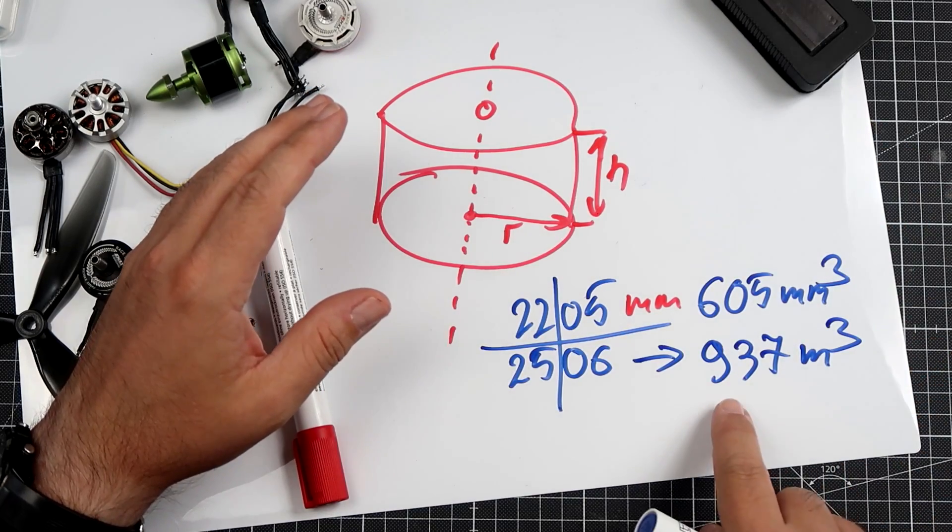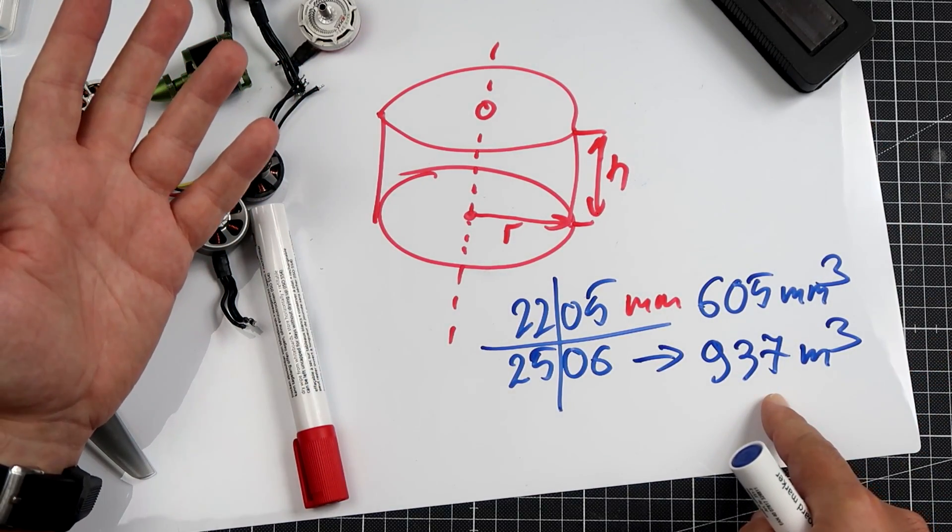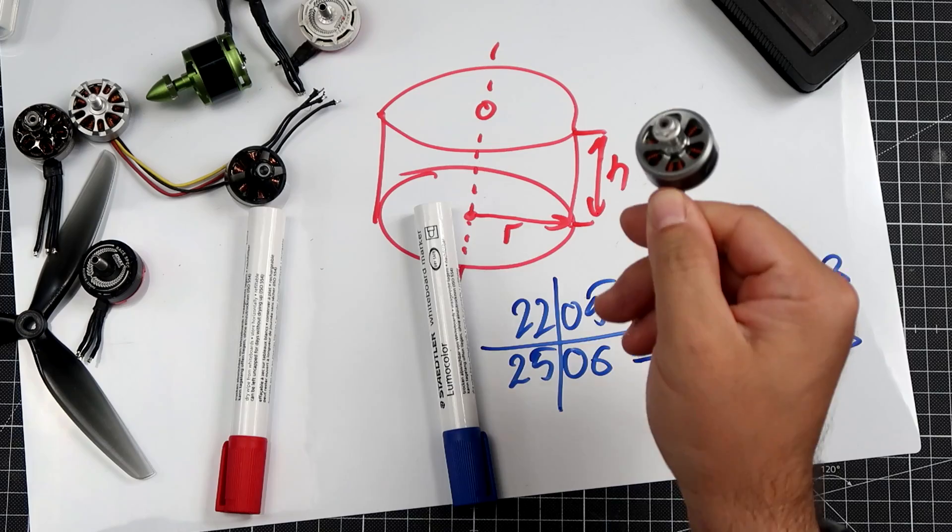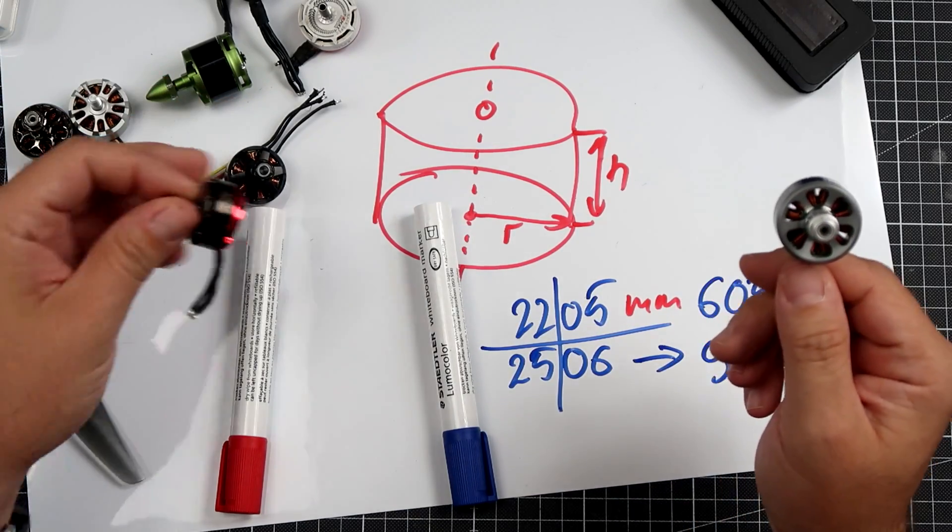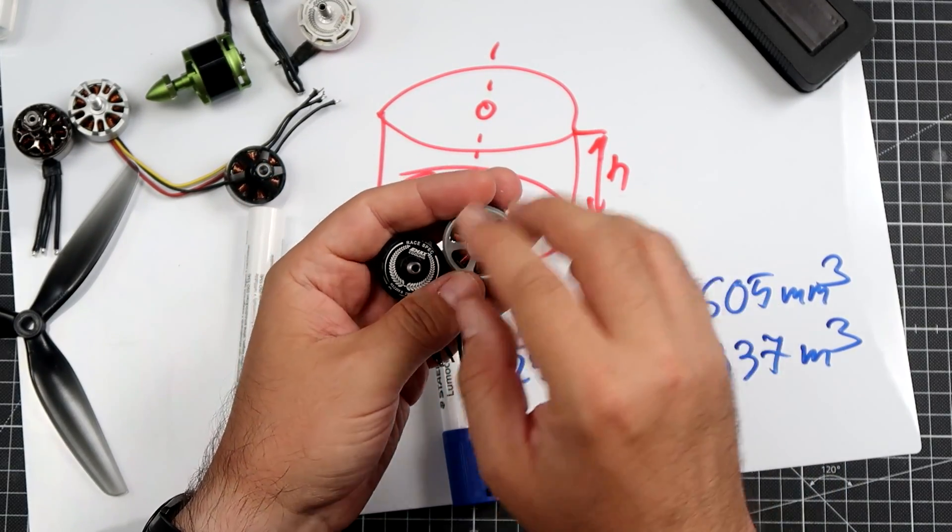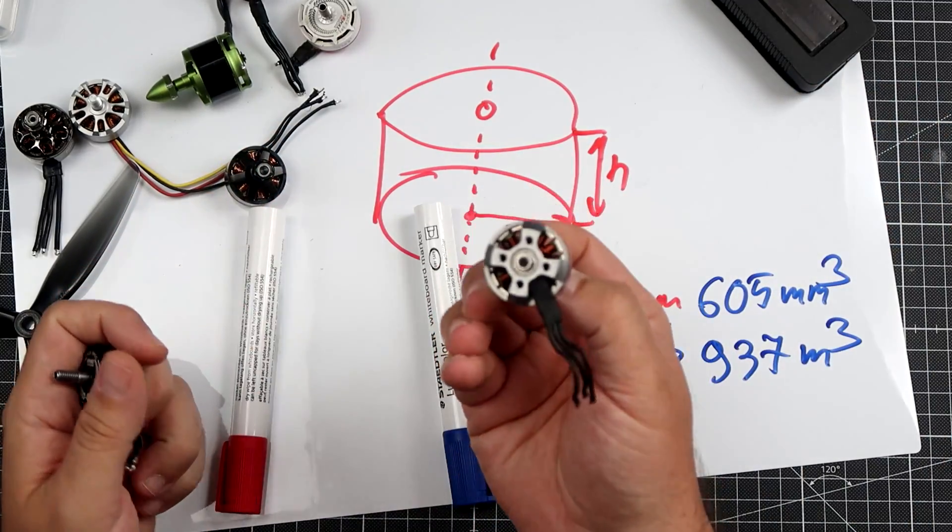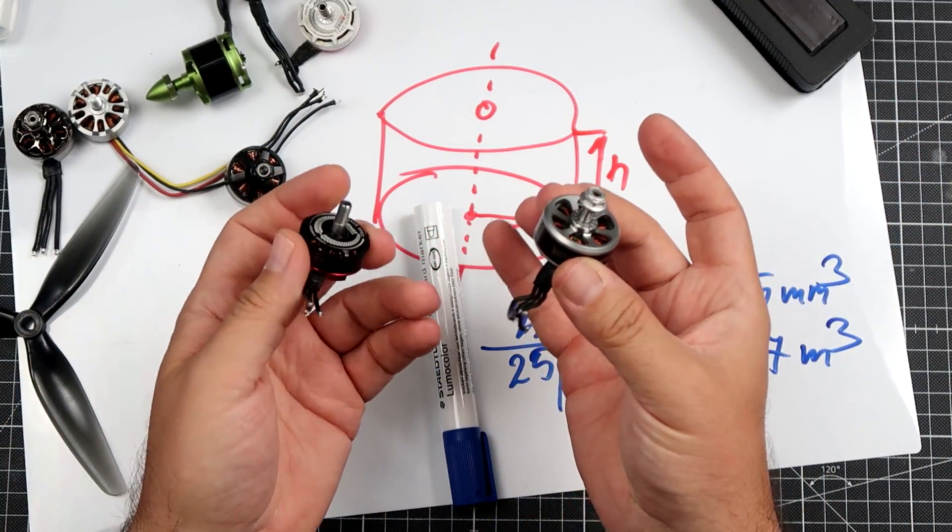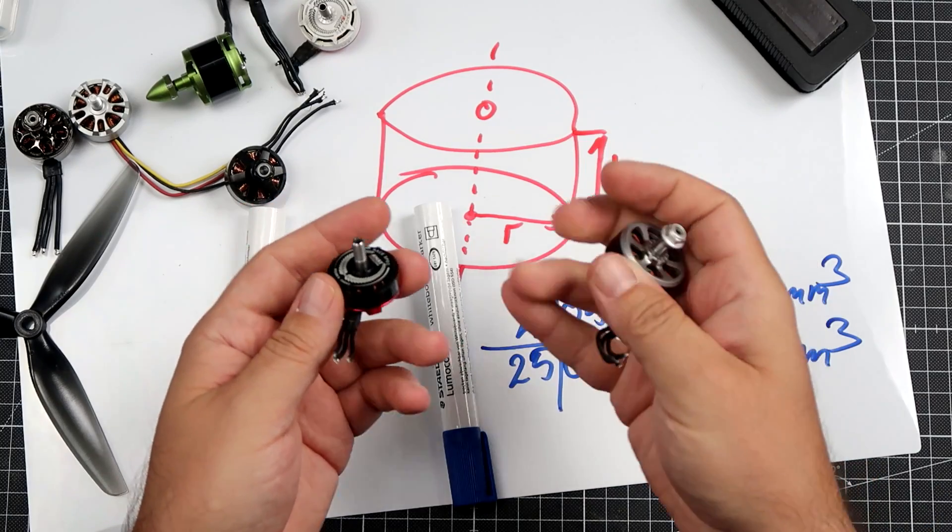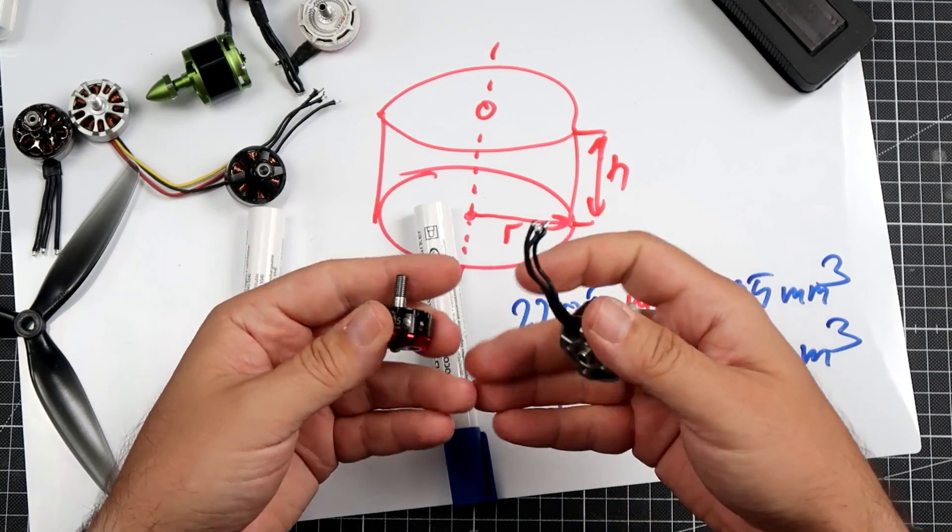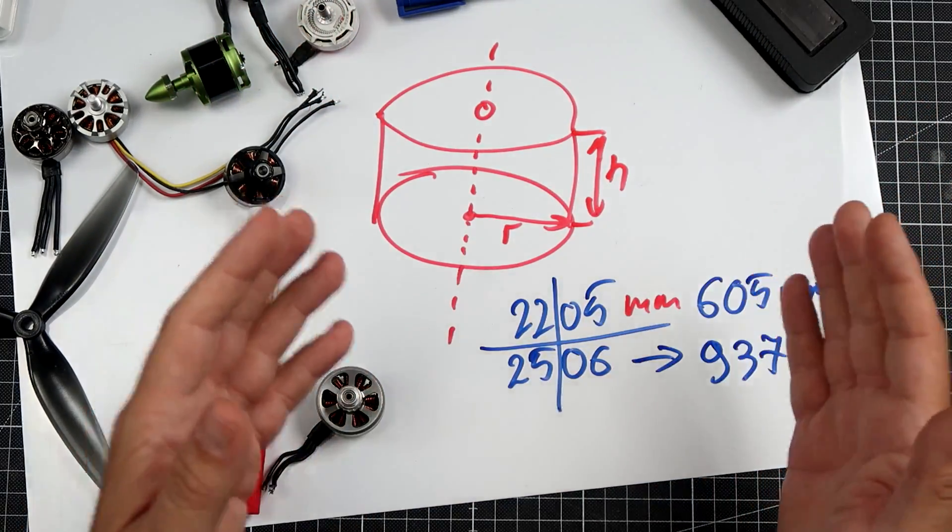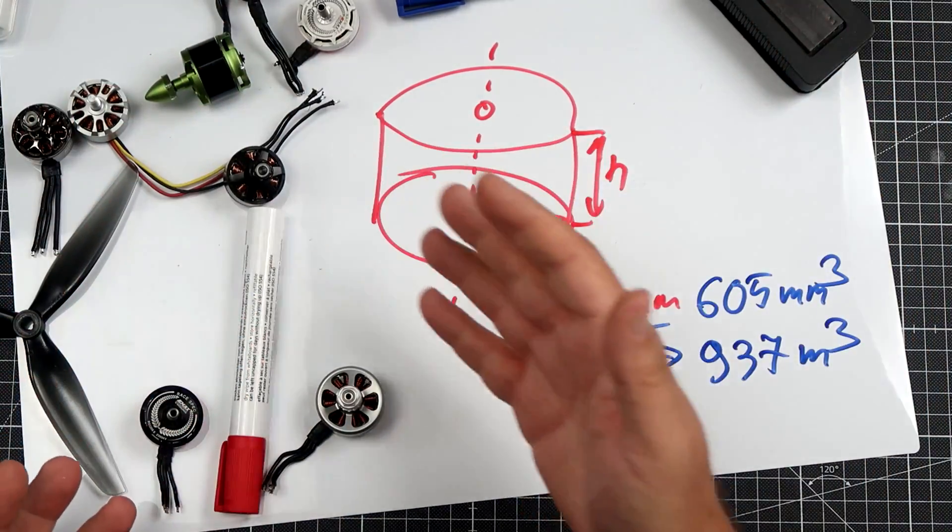A motor 2205 means radius is 11 millimeters, height is 5 millimeters. If you calculate 11 squared times pi times 5, you get that a 2205 motor has a volume of around 605 cubic millimeters. A 2506 motor will have around 937 cubic millimeters, which is 50% higher volume and thus 50% more torque.